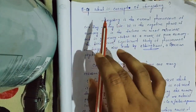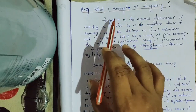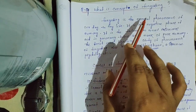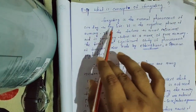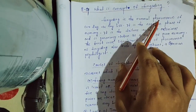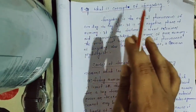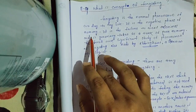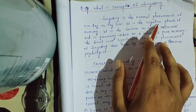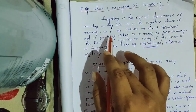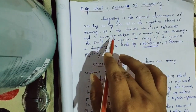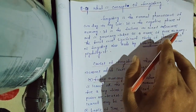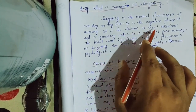Forgetting is the normal phenomenon of our day-to-day life. It is the negative phase of memory. It is the failure to recall experience and is generally taken as a remark or mark of poor memory.